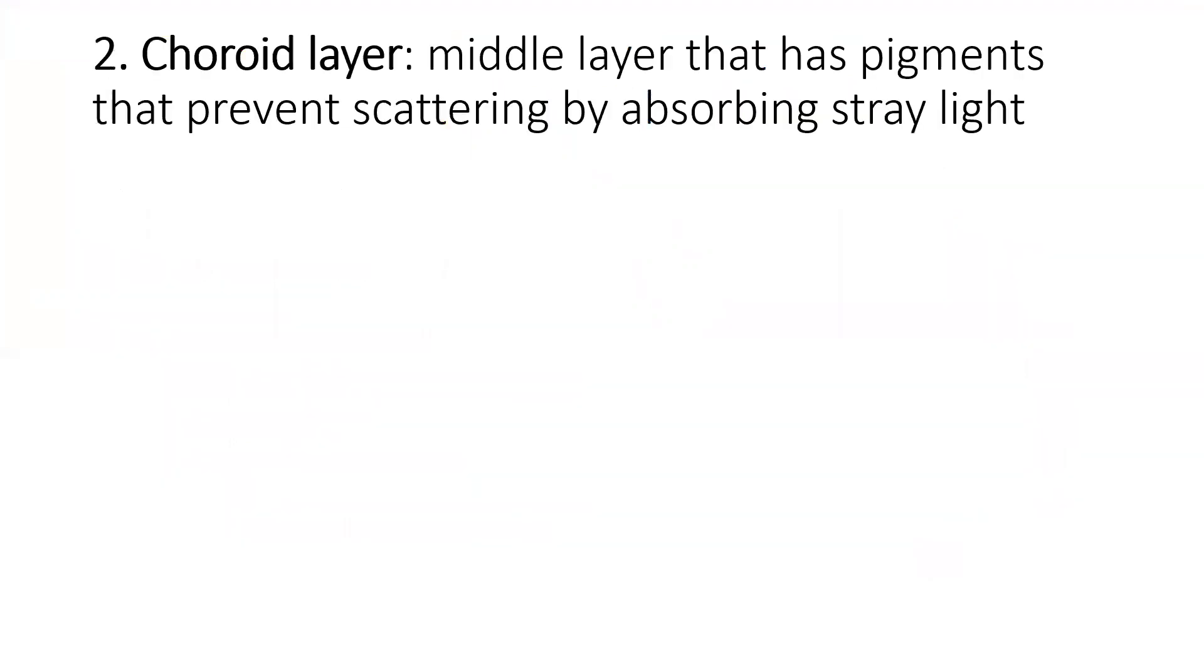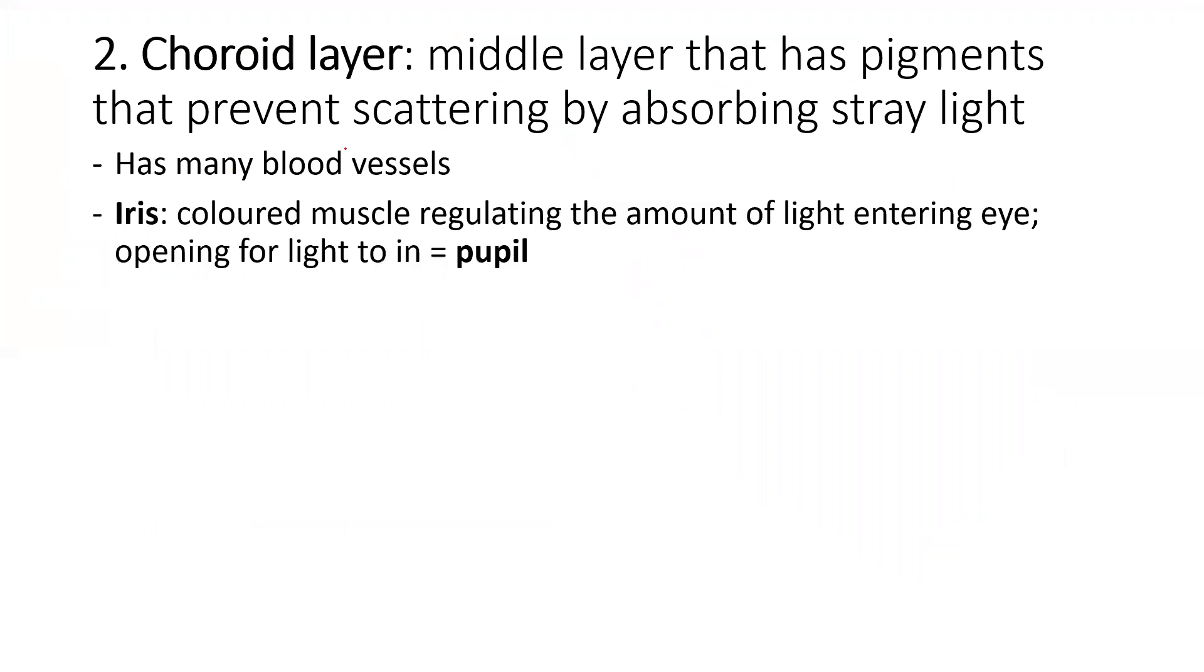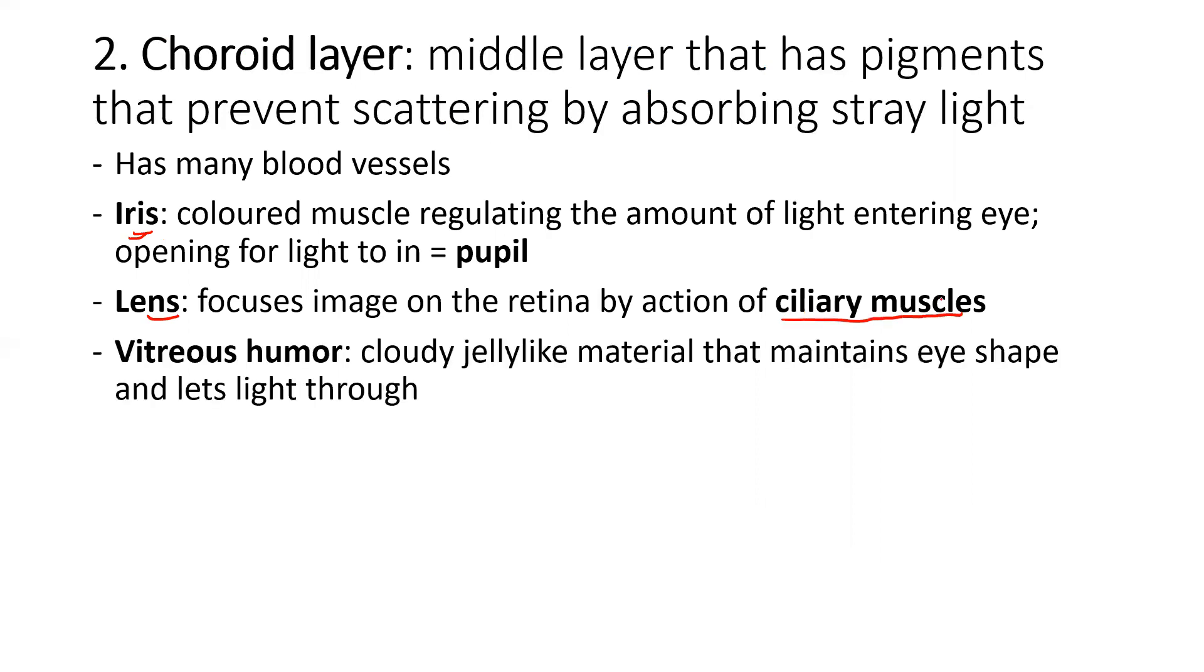Choroid layer, middle layer that has pigments. Many blood vessels. The iris is the colored portion. And the hole is the pupil. The lens focuses the image on the retina by the action of those ciliary muscles we pointed out. And the vitreous humor, we said it was a cloudy jelly-like material. It maintains the shape of the eye.